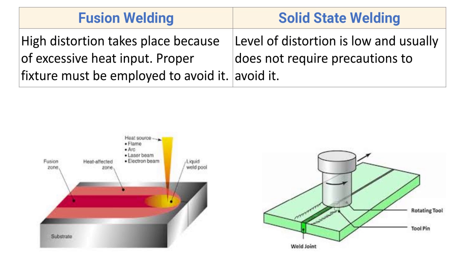Next point: in fusion welding, high distortion takes place because of excessive heat input, and proper fixtures must be employed to avoid it. The metal first expands and then contracts, generating internal residual stresses in the welded component. In solid state welding, the level of distortion is low since no heat is applied externally and there is no melting, meaning no sudden expansion and contraction occurs — heavy fixtures are usually not required.